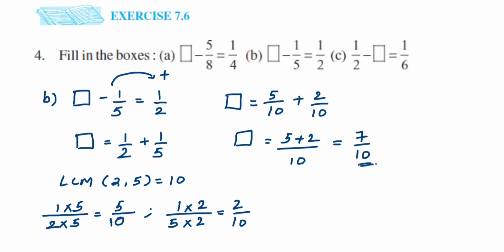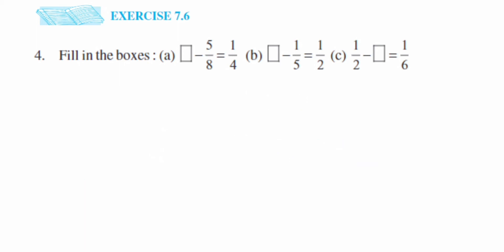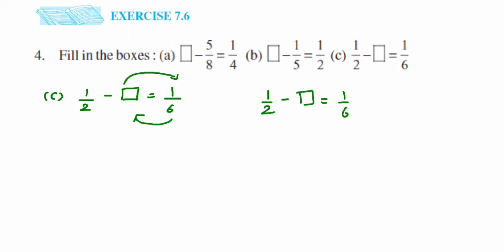So in place of the blank we get 7 upon 10. The last question, Problem C, is different from the first two: 1 upon 2 minus blank is equal to 1 upon 6. There are many ways to solve this. I can transpose the box to the other side, or bring 1 upon 6 to the left-hand side. To avoid a negative sign with the box, I'm going to transpose the box to the other side.